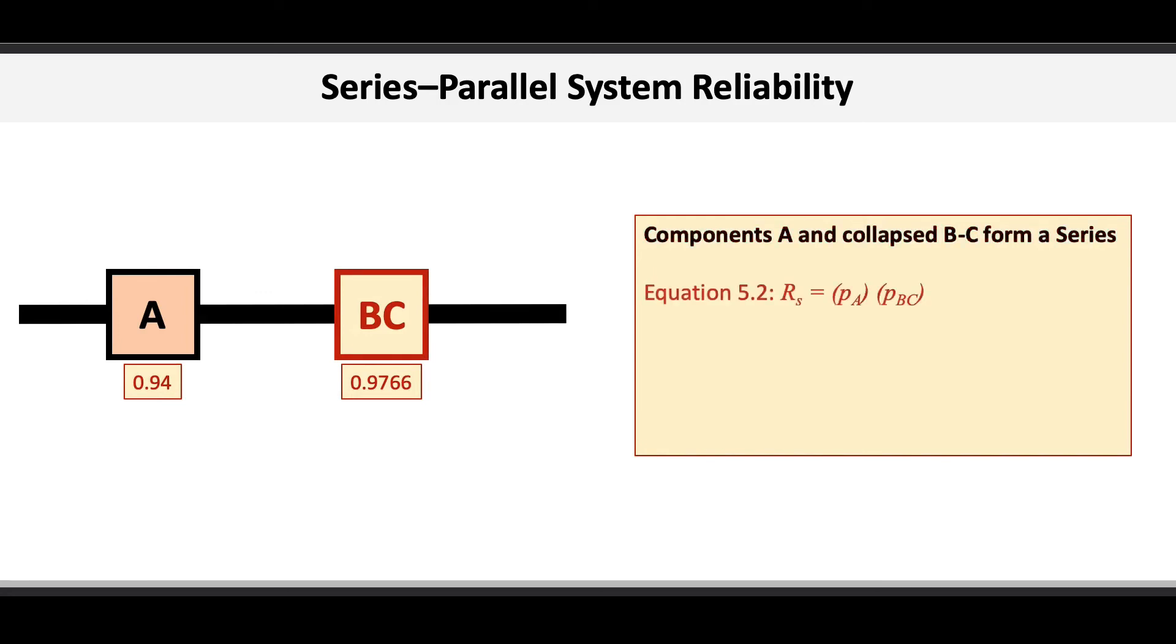Now we use formula 5.2 to determine the reliability of the series. Using formula 5.2, the reliability of the system is equal to the reliability of A times the reliability of the reduced component BC.